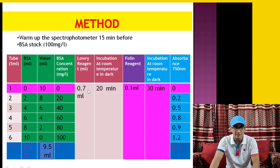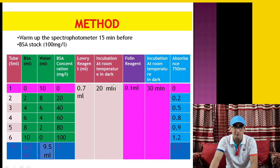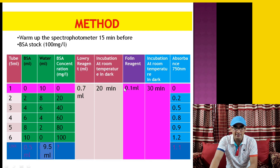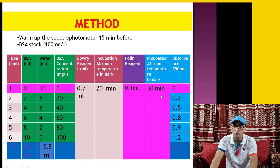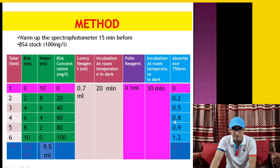To all test tubes, 0.7 ml of Lowry reagent is added and incubated in the dark for 20 minutes at room temperature. After this, 0.1 ml of Folin reagent is added to each test tube including the unknown sample, and then incubated again for 30 minutes in the dark. These two incubations are why this method takes longer than other methods. After the 30-minute incubation, absorbance is measured at 750 nanometer.